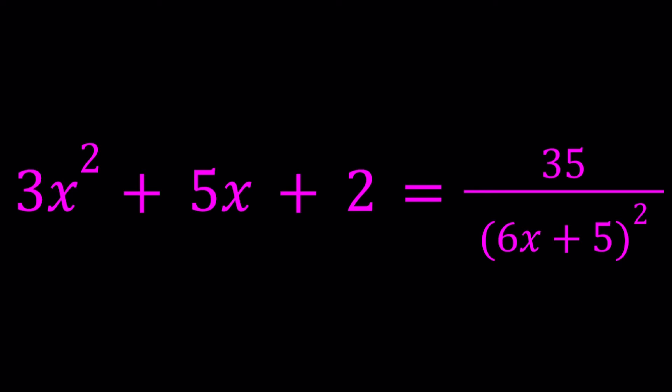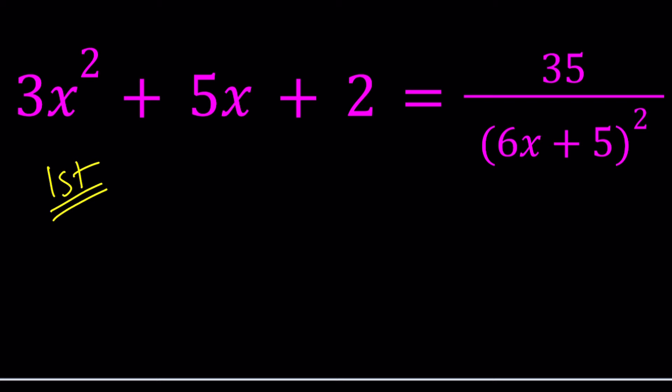First of all, let's take a look at this equation. What kind of equation are we going to be getting from here? If you cross multiply, by the way, I'm going to be presenting two methods, and let's start with the first one. I'll go ahead and use cross multiplication first. 3x² + 5x + 2 multiplied by this expression. And we can go ahead and square this. That's going to give us 36x² + 60x + 25, and the product is going to equal 35.